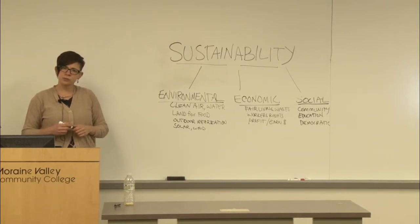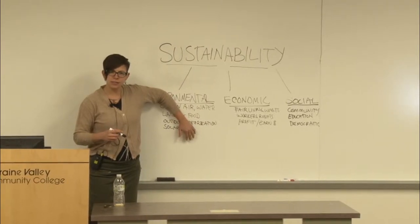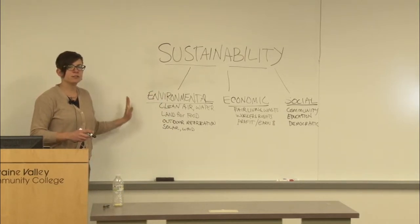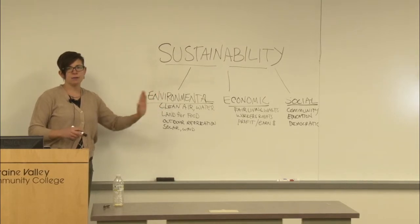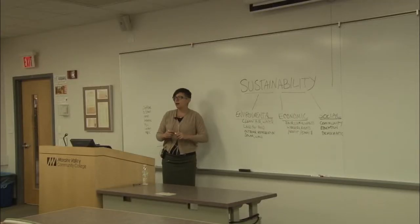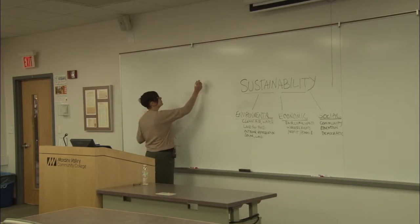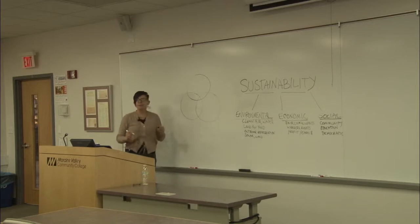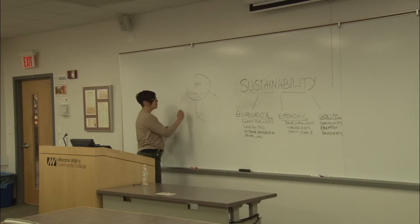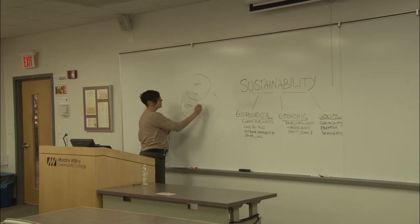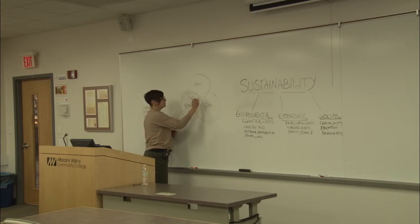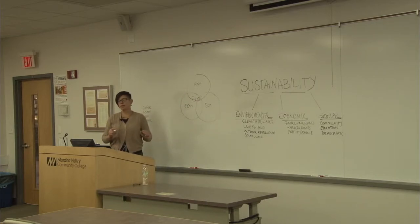If you have a three-legged stool and take one leg away, can you sit on it? No — it'd be pretty tricky. So we need to be thinking about sustainability from this three-legged stool concept, always thinking about them simultaneously. Another way this is depicted is a Venn diagram, where you have three circles of equal shape — environmental, economic, and social — and where they intersect is sustainability. Always thinking about these three things at the same time.